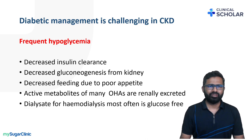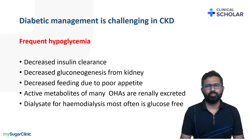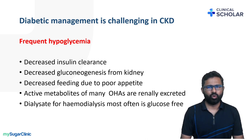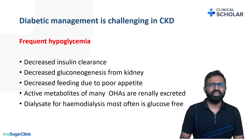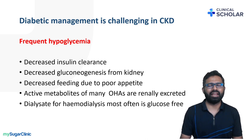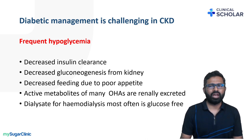Firstly, the management of diabetes is a bit challenging in CKD mainly because of frequent hypoglycemia. The reasons for frequent hypoglycemia in patients with CKD: one is decreased insulin clearance from the kidney. Normally, insulin is cleared from the kidney. If a patient is having chronic kidney disease, it is not cleared to the same extent as in the general population, predisposing the patient to hypoglycemia.